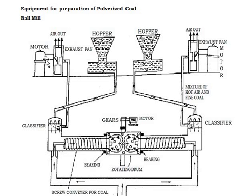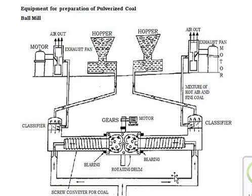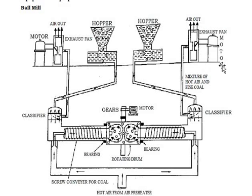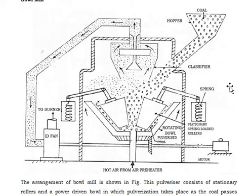Next, the equipment for preparation of pulverized coal: the ball mill. You can see the ball mill here with the motor, two hoppers, a classifier attached to both hoppers, a gear motor, bearings, and a rotating drum. You can also see the screw conveyor through which coal is conveyed with the help of hot air from the air preheater, and an exhaust fan which throws exhaust material outside.